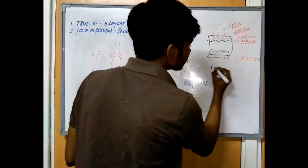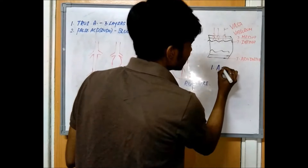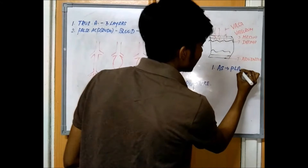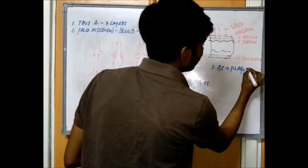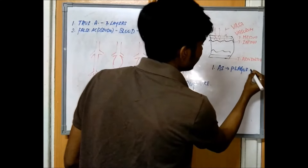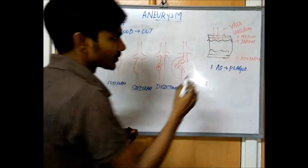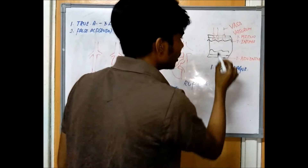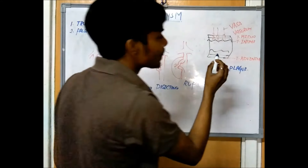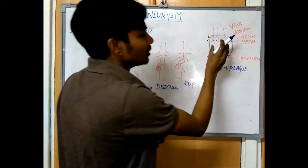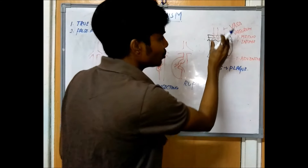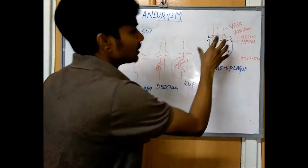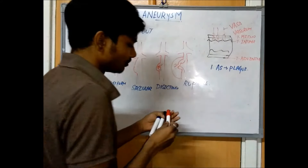In atherosclerosis, there is a plaque formation in the blood vessels. When there is plaque formation, it causes less blood flow to the layers — the vasa vasorum supply is reduced — which leads to the formation of aneurysm.